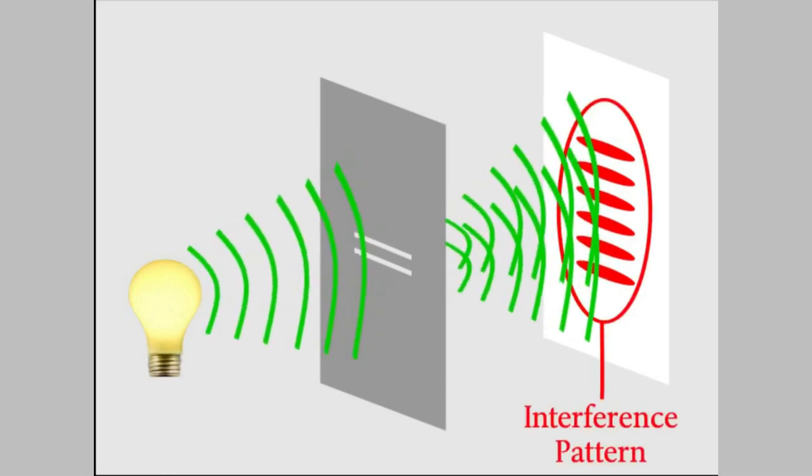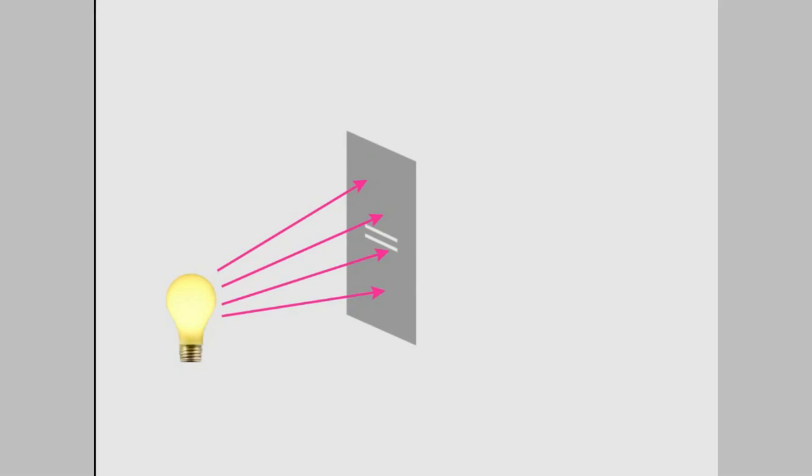So we have a way to decide whether light's a particle or a wave. If it's a particle, when we do the experiment, we'll see two bright spots on the far side of the slits, but if it's a wave, we'll see a pattern of a lot of bright and dark spots.